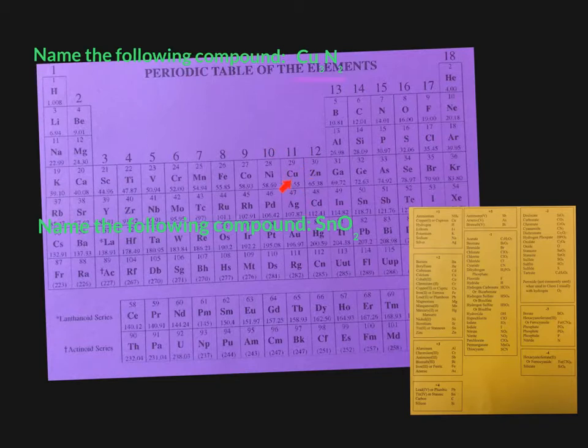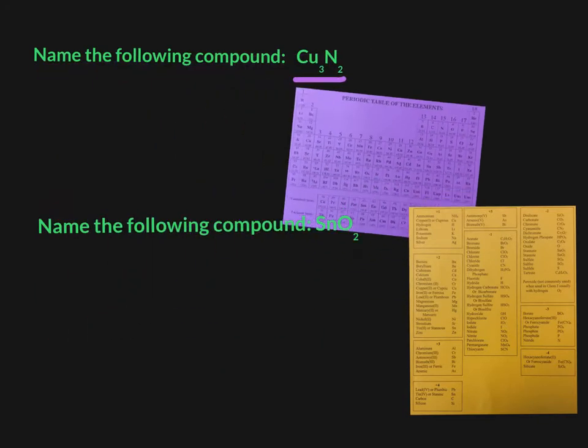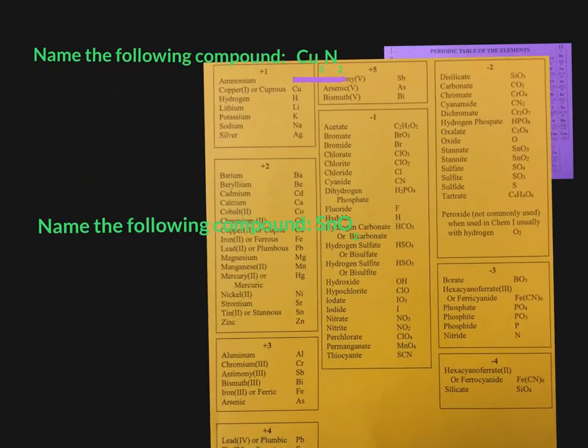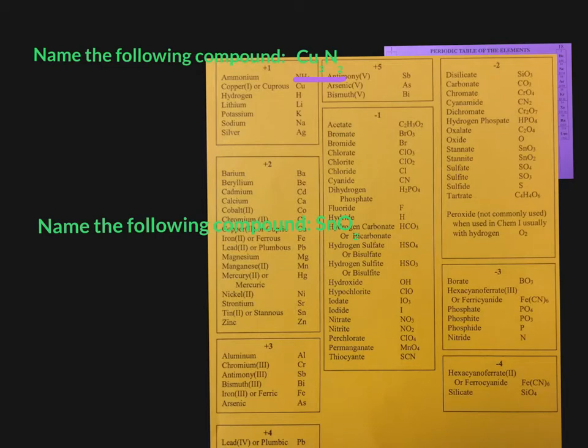When you take a look at copper here, copper is in the transition metal area and it doesn't follow a pattern. We know that group 1 elements get a +1 charge because they lose one valence electron. Group 2 elements get a +2 charge because they lose two electrons. Group 13 loses three, so they get a +3 charge. But these guys, we learned, don't have a particular pattern. So we need something else now.